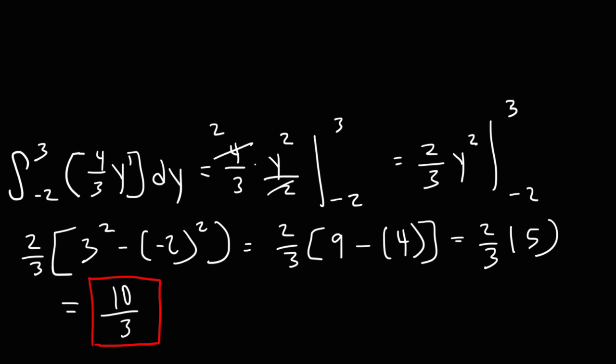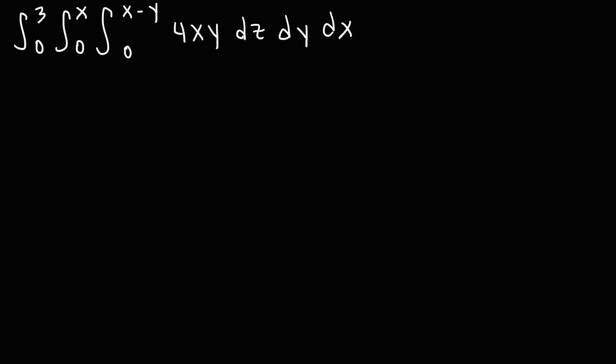That's how you evaluate a triple integral — it's very similar to evaluating a double integral; the only difference is you have an extra step. Here's another example we can work on. Let's begin with the integral in the middle, which I'm going to rewrite. We have the integral from 0 to x minus y of 4xy, and we're going to integrate it with respect to z.